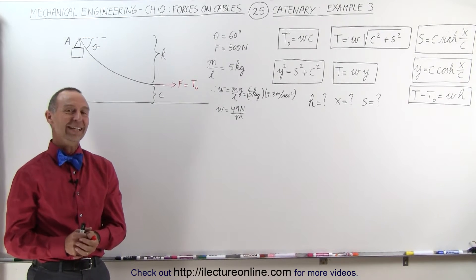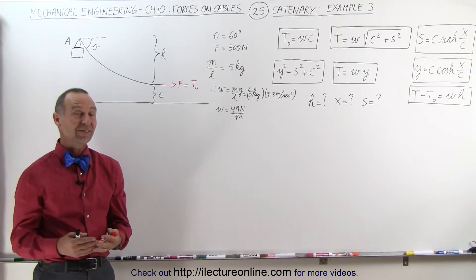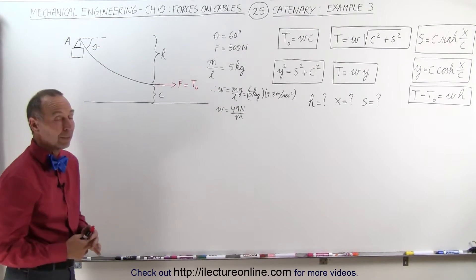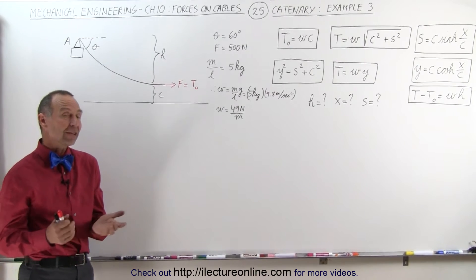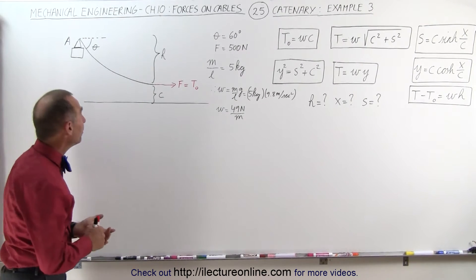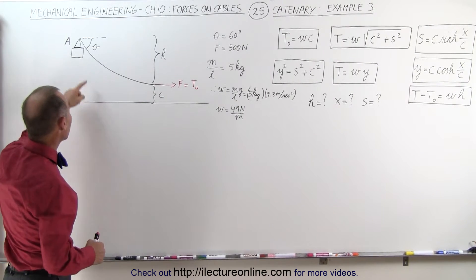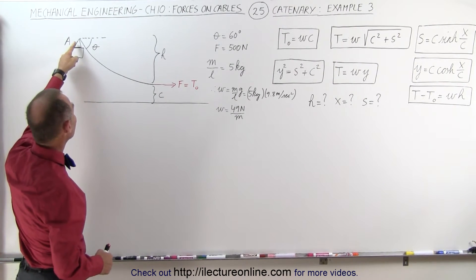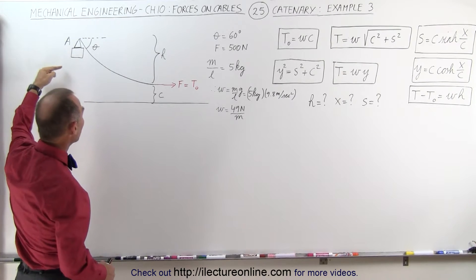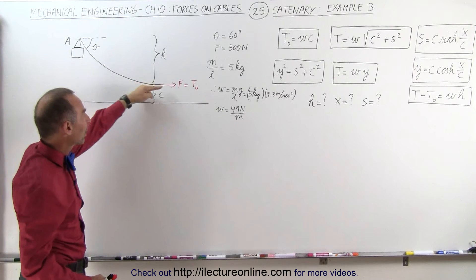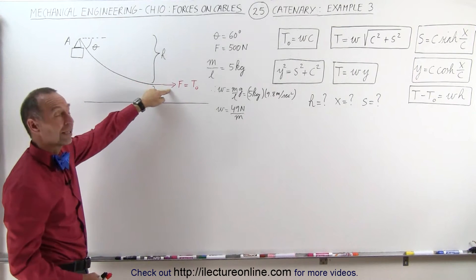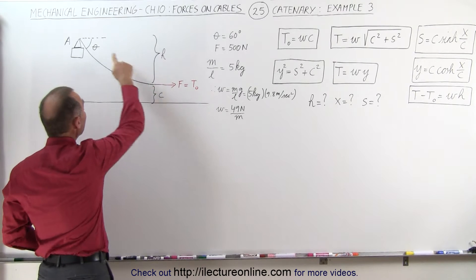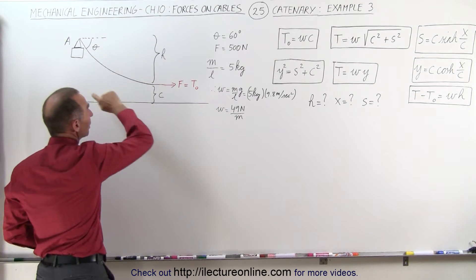Welcome to ElectronLine. Here's our third example of how to solve a catenary problem. This is kind of an interesting one. Let's say that we have a cable hanging on one side and then we're pulling in this direction on the other side, and the force is given and the angle is given.